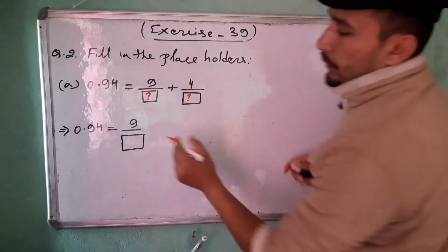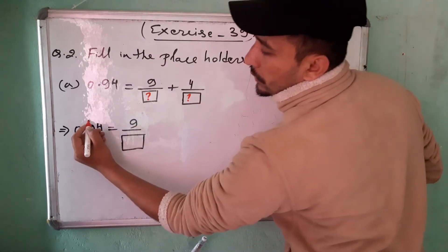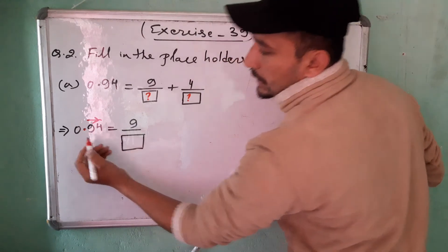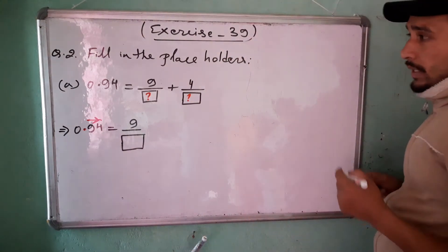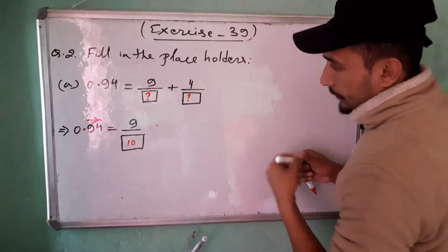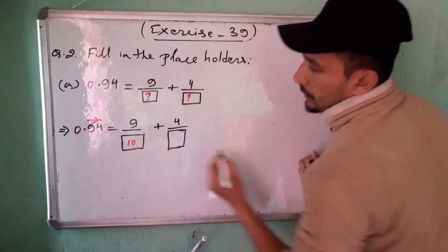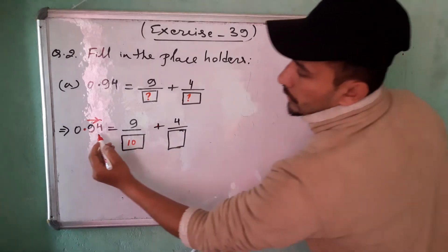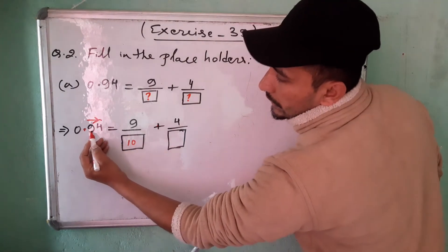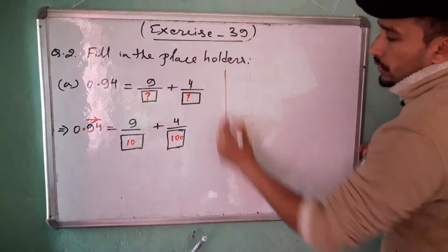Identify the position of 9. Count from the decimal point: units, tens — so 9 is in the tens place, therefore divided by 10. Then find the position of 4: units, tens, hundreds — so 4 is in the hundreds place, therefore divided by 100.